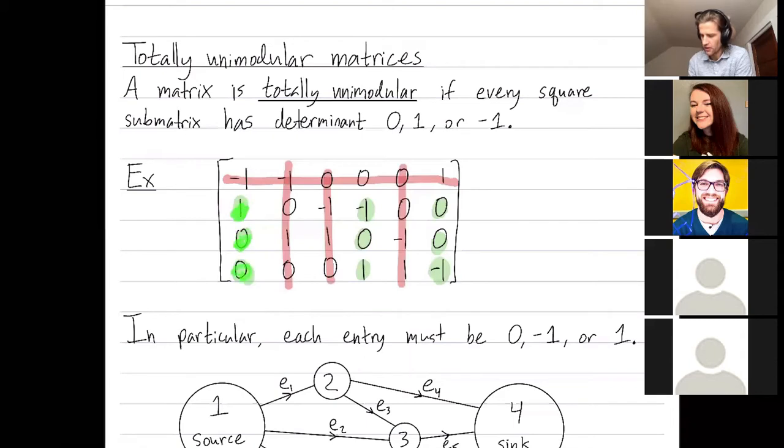So I have 1 times the determinant of this 2x2 matrix, which is 0. So this particular green submatrix at square has determinant 0. So we're fine there. But this has to be the case for every square submatrix.